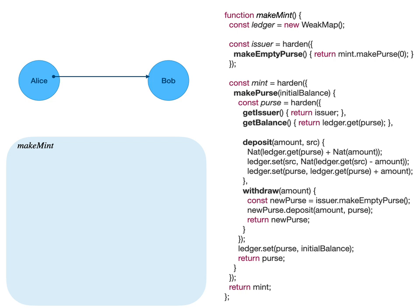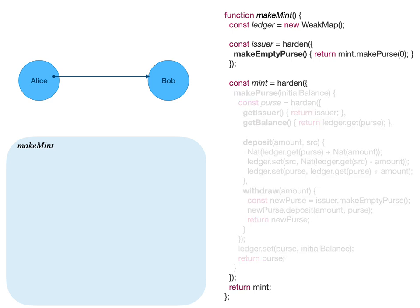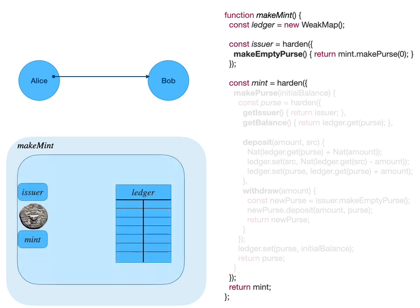On the outside we have our makeMint function. Each time makeMint is called, it creates three objects: the ledger, the issuer, and the mint. So now we've got these three objects — ledger, issuer, and mint — that together represent a money system, instantiating a logical currency.